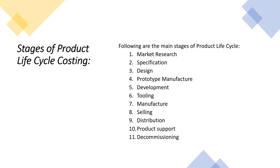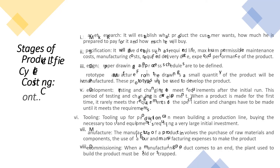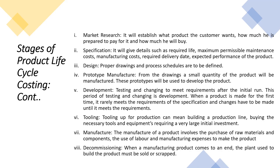The main stages of product life cycle costing are: market research, specification, design, prototype manufacture, development, tooling, manufacture, selling, distribution, product support, and decommission. Market research establishes what product the customer wants, how much they are prepared to pay for it, and how much they will buy.